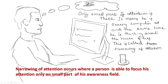For example, if you have to work on the computer but there is a housefly on the computer disturbing you, a little bit of your mind goes to the housefly and a little bit stays on the computer. So your complete attention is not on the computer — this is called narrowing of attention.